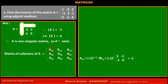A11 is the cofactor of the element at first row, first column. It equals (-1) squared, positive 1, into the value of its minor: 3 into 0 minus (-1) into (-1), giving -1. So the value of cofactor A11 is -1.